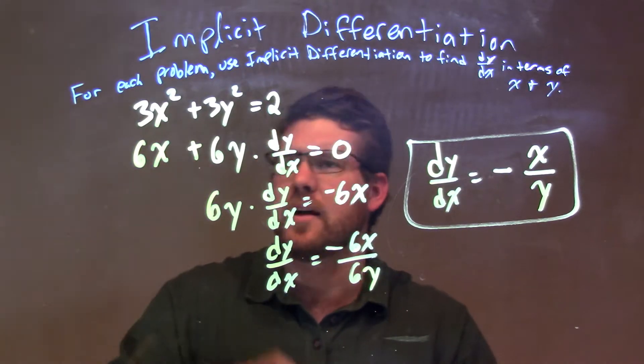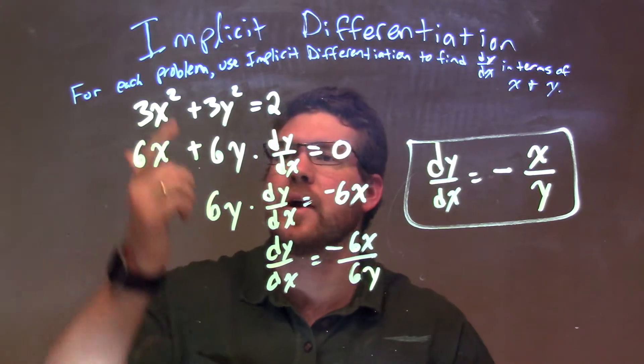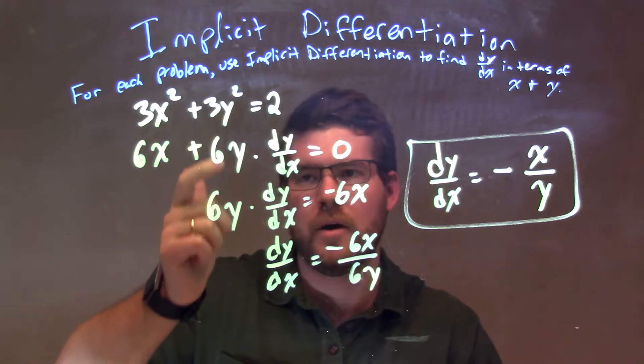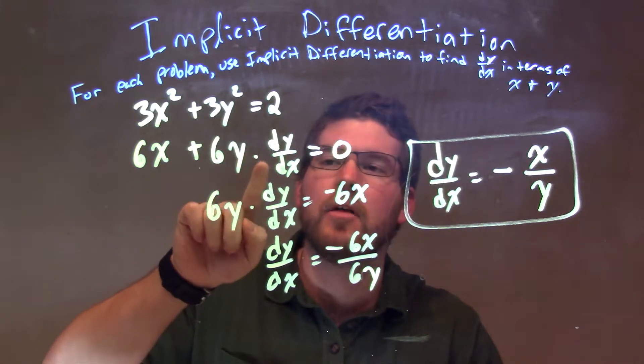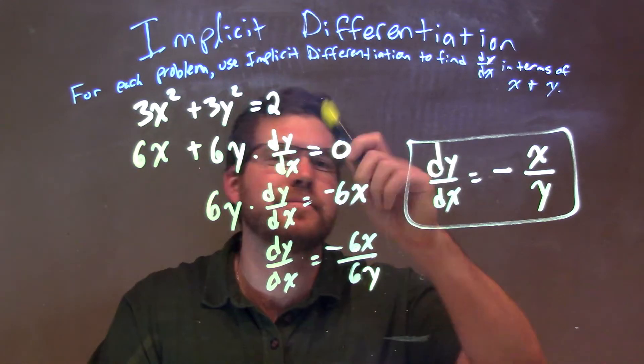So let's recap. We're given 3x² + 3y² = 2. Using implicit differentiation, 3x² becomes 6x. 3y² becomes 6y, or 6y times dy/dx, right? The y has a little extra step - we multiply by the derivative of y there. 2 is just 0.